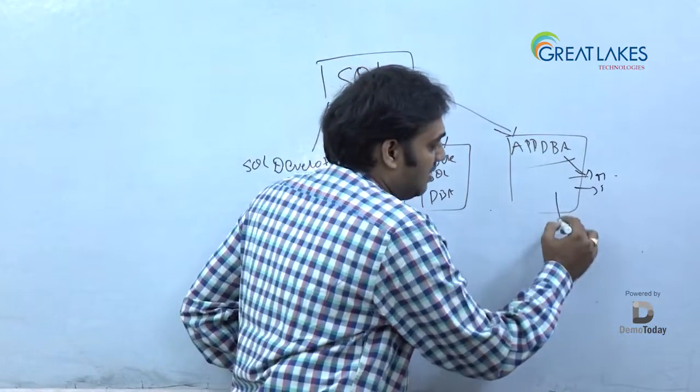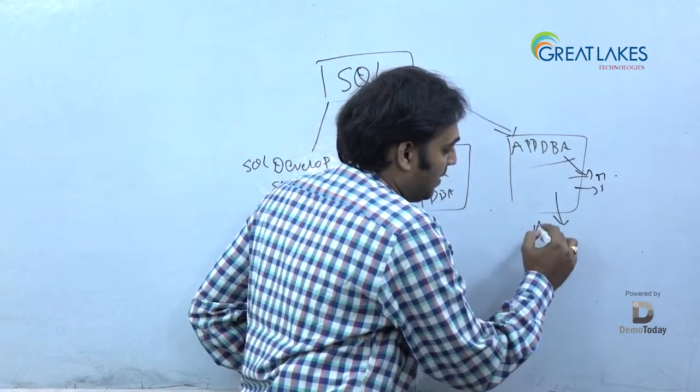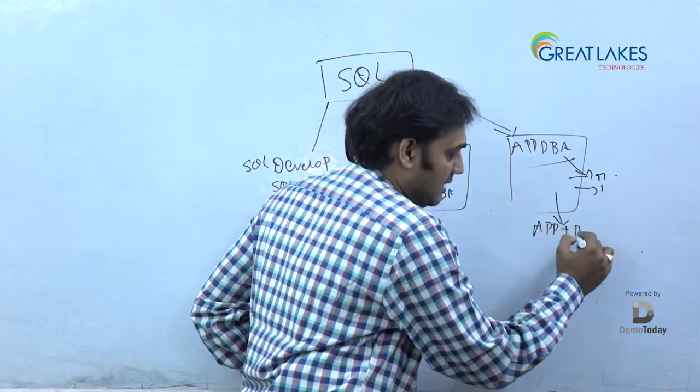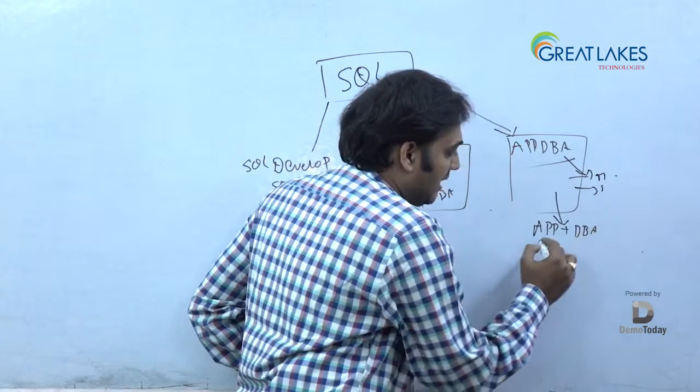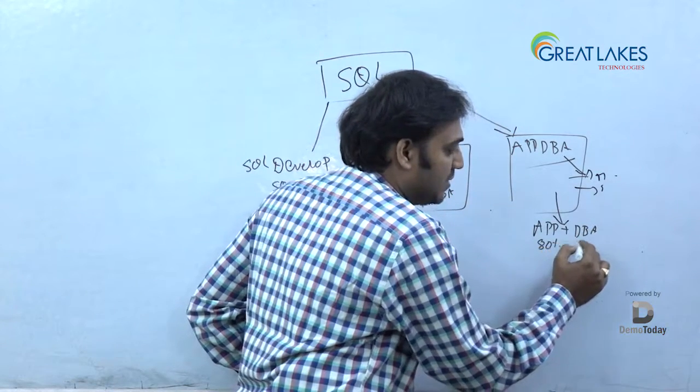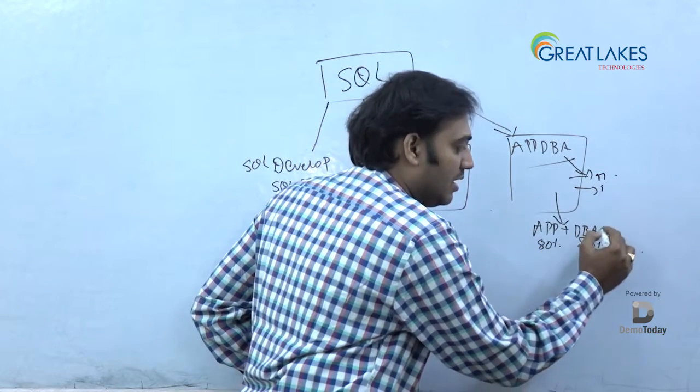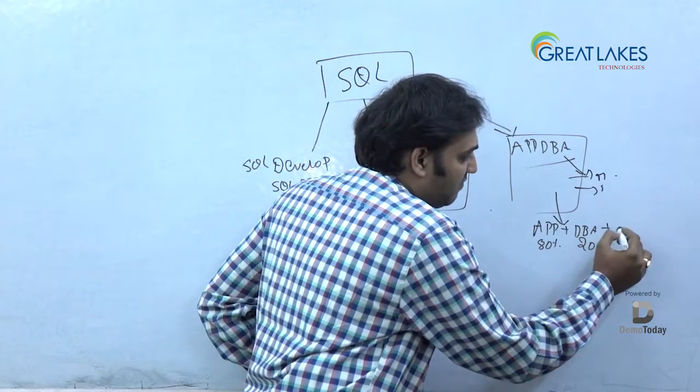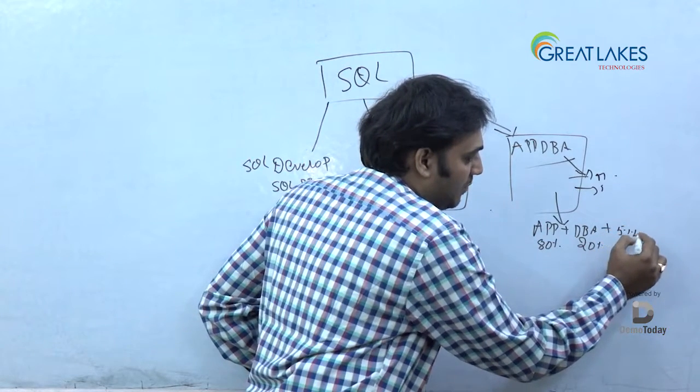So when I say here, there is a mixture of application knowledge plus DBA knowledge. 80% will be application and 20% will be DBA knowledge. And around 5% of developer knowledge is also essential.